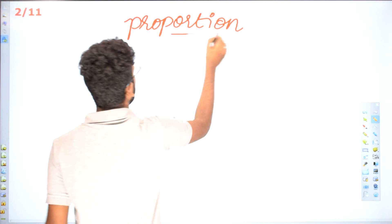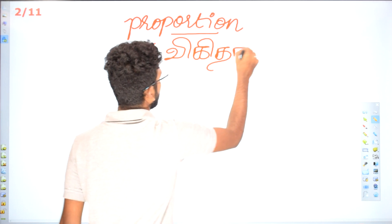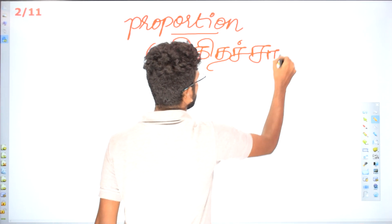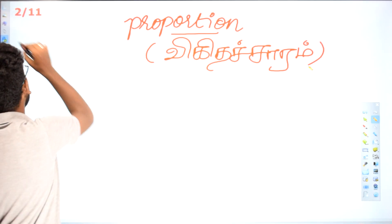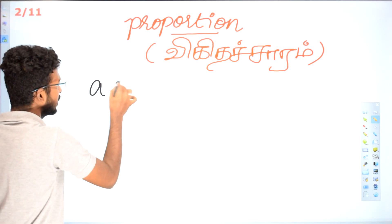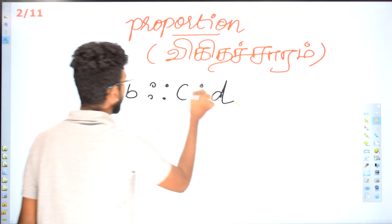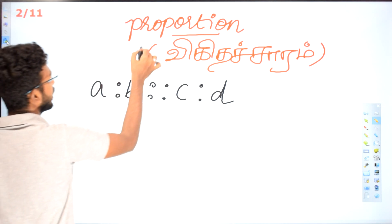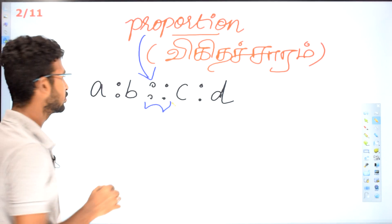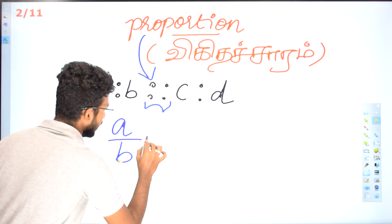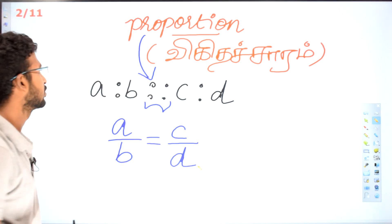Proportion — I have already told you that A is to B proportion C is to D. The proportion symbol is nothing but equals to: A divided by B is equal to C divided by D. That is the symbol for proportions.